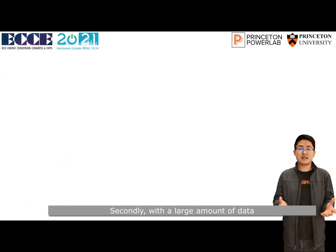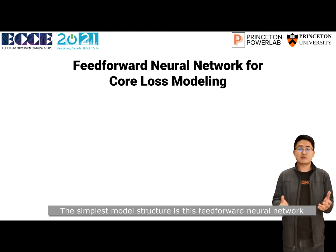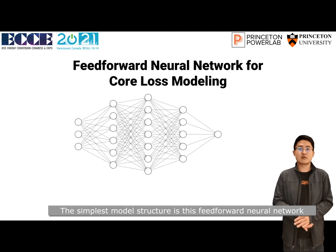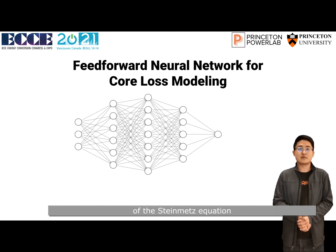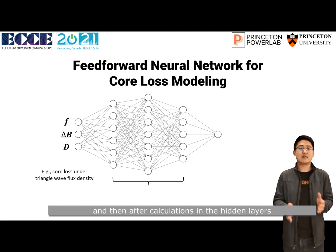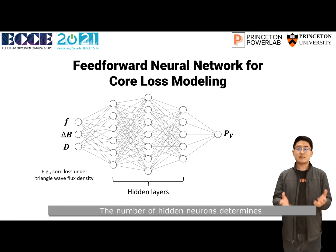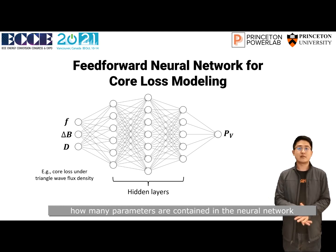The database for each material contains the geometry information of the core sample, the measured signal, and the calculated properties. With this large amount of data, we are able to build and train a machine learning-based core loss model. The simplest model structure is a feed-forward neural network, which can be considered as a neural network version of the Steinmetz equation. It takes the frequency, flux density, and duty ratios as the inputs, and after calculations in the hidden layers, it gives out the predicted value of the core loss. The number of hidden neurons determines how many parameters are contained in the neural network, which is directly related to its prediction accuracy.